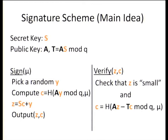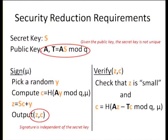Here's the signature based on SIS — a slight modification will be based on LWE. The secret key is a matrix S; the public key is a random matrix A and T equals AS mod Q. The signature follows the Fiat-Shamir framework — if you're familiar with Schnorr signatures, try to map the letters. You first pick a random Y as a masking parameter, then compute the challenge C as the hash of AY mod Q and your message, then compute the signature Z equals SC plus Y. The output is Z, C.